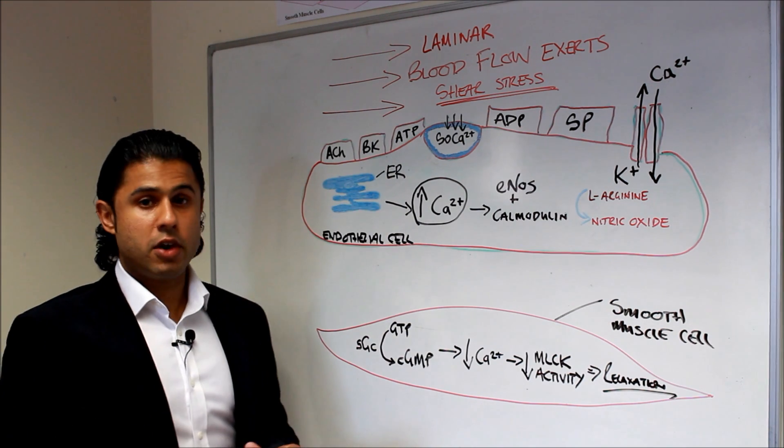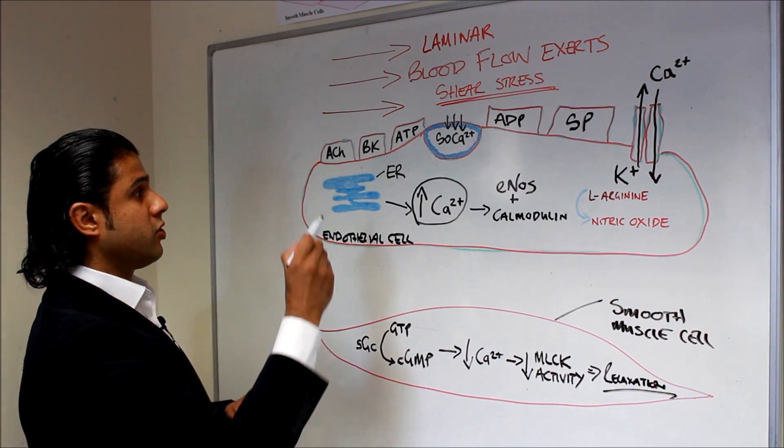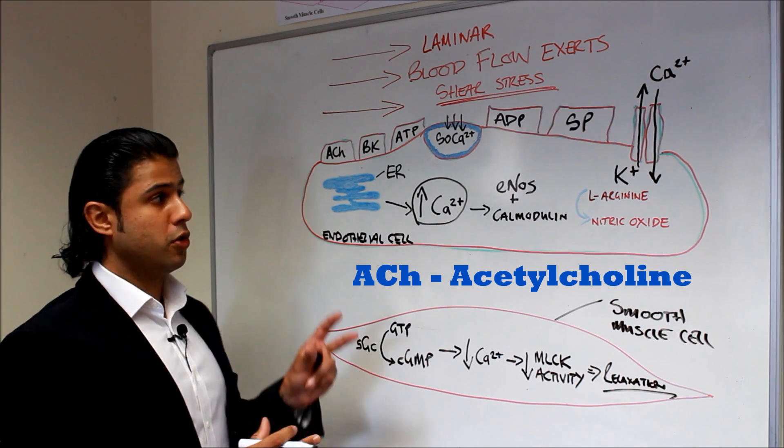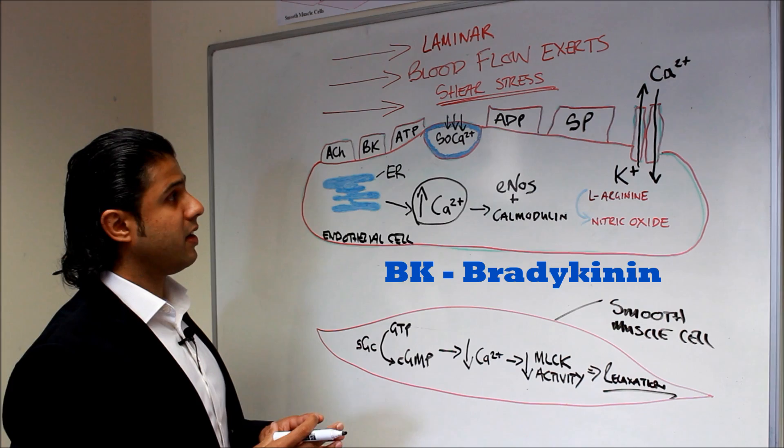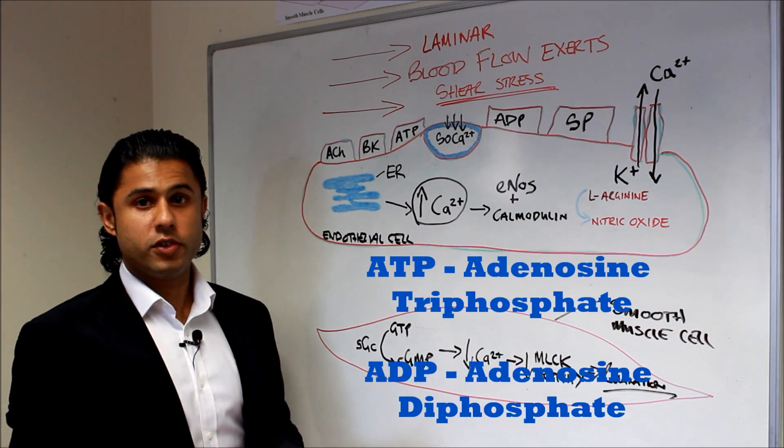Now that blood is carrying agonists of nitric oxide such as acetylcholine, so ACH, bradykinin is also a nitric oxide agonist, as well as adenosine triphosphate,